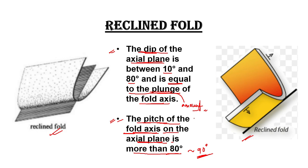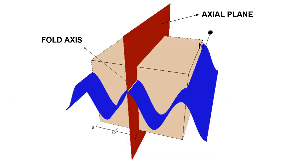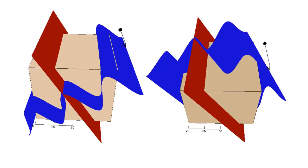So let's try to visualize the recline fold. This is a normal upright fold. The axial plane is shown in red color, this is the fold, and the yellow line is the fold axis. On the basis of this axial plane and the fold axis, we will try to visualize the recline fold. The first criteria is that the axial plane should dip around 10 to 80 degrees, so what we do is dip the axial plane — here it's around 60 degrees. So the first step is done.